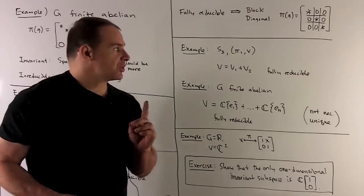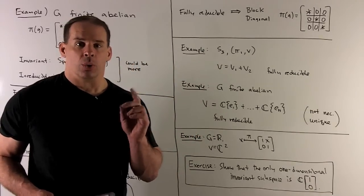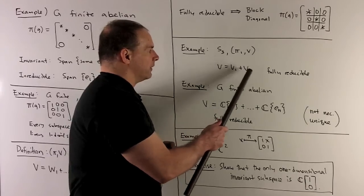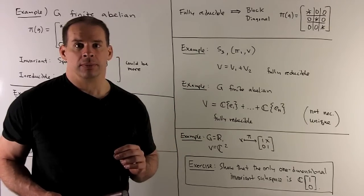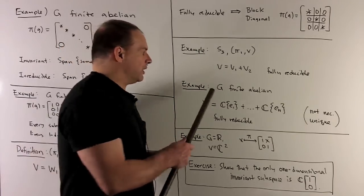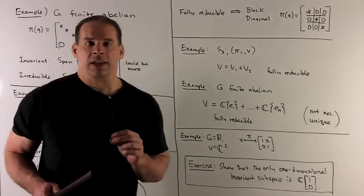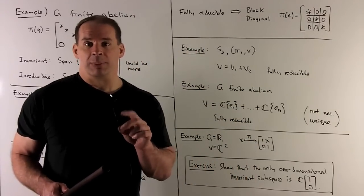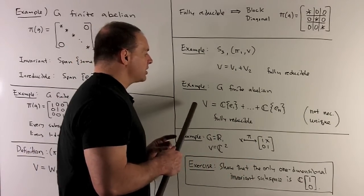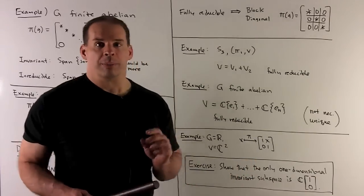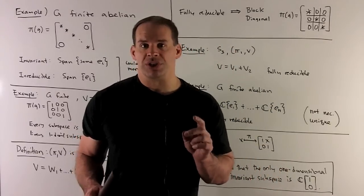Let's look at some examples. First example: S₃ with representation π₁. We already saw that V = V₁ ⊕ V₂, and V₁ and V₂ are irreducible, so π₁ is fully reducible. Next example: G finite abelian. We consider the basis that puts our matrices in diagonal form — each basis vector's span is an irreducible representation, and taking the direct sum gives us V back, so in this case it's fully reducible. Note: by the example we had, full reducibility is not necessarily unique — we may get it by different choices of the Wᵢs.